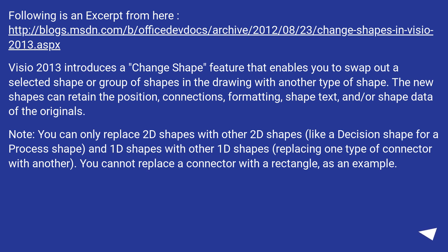Note: you can only replace 2D shapes with other 2D shapes, like a decision shape for a process shape, and 1D shapes with other 1D shapes, replacing one type of connector with another. You cannot replace a connector with a rectangle, as an example.